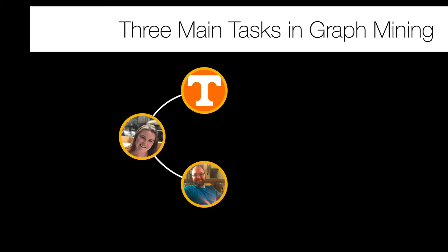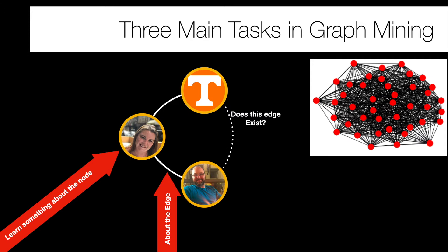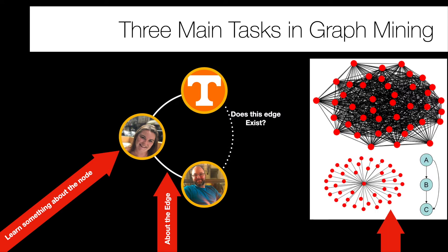We can define three main tasks in graph mining. The first is to learn something about a node — such as political preferences or demographic information. The second is learning about an attribute of an edge, including whether that edge exists at all. The third is understanding something about larger network structure — specifically looking for subgraphs that recur more frequently than expected, like hub structures or triangle (ABC) structures.